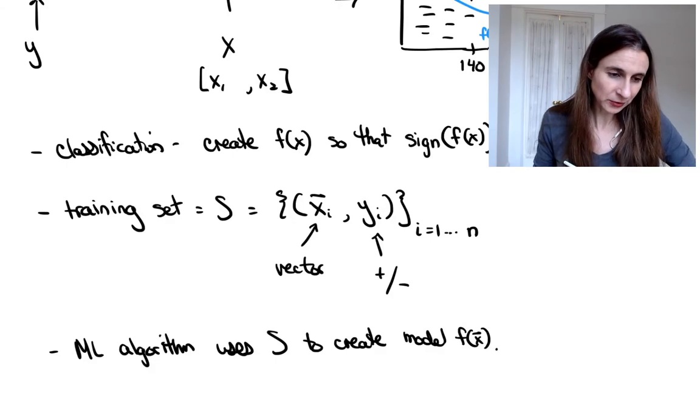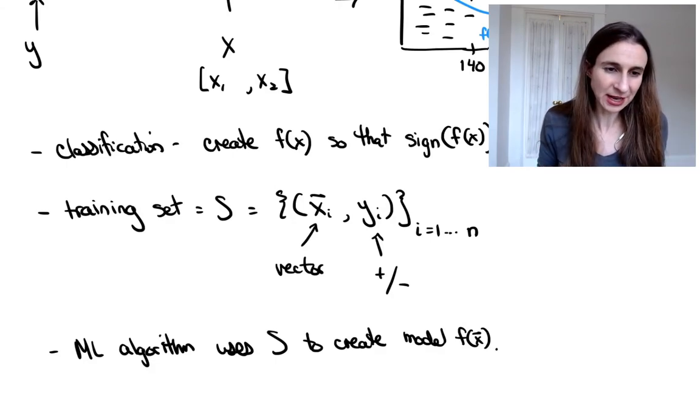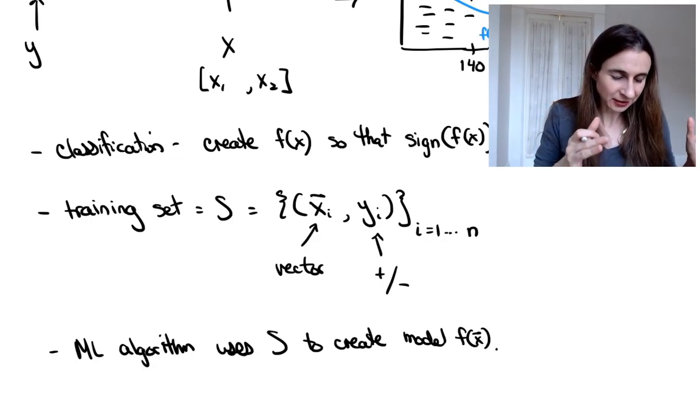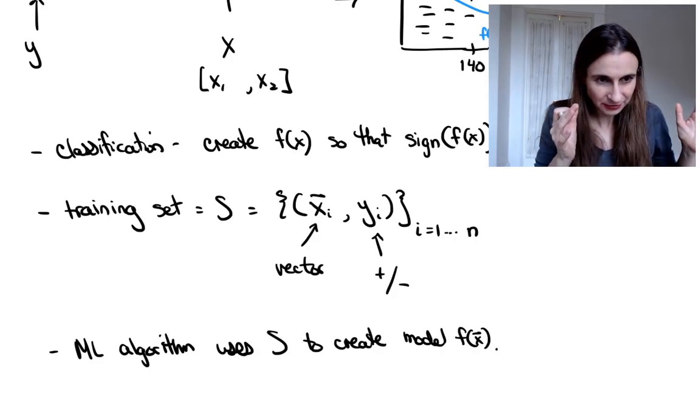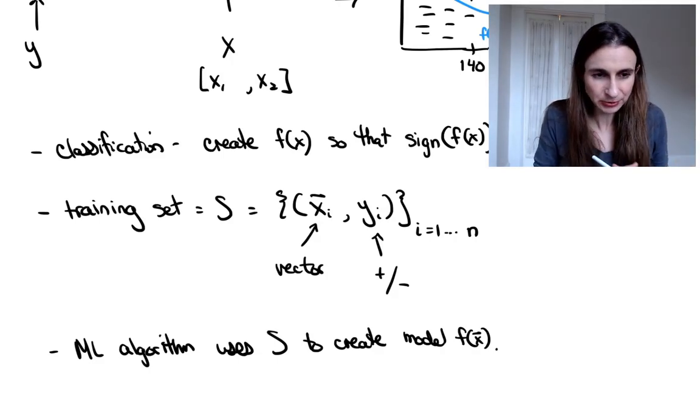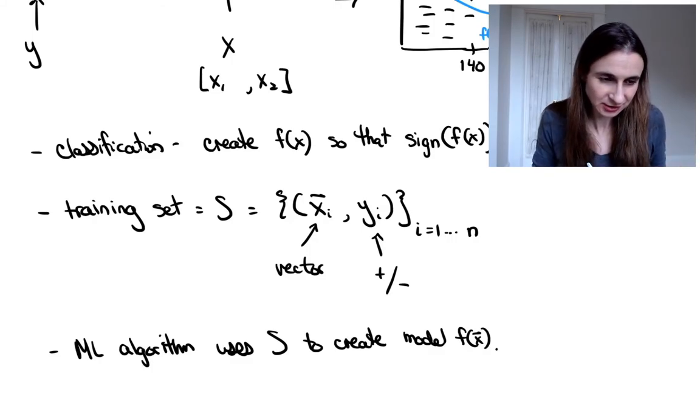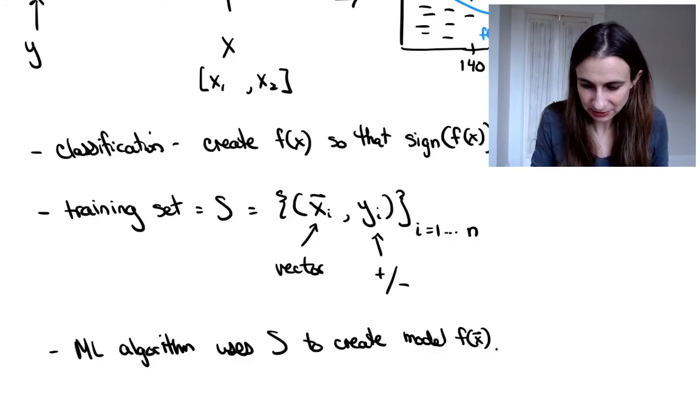Credit card fraud. So if you think about all the transactions that happen to go through credit card companies, right? Credit card companies have whole sets of hundreds of people whose teams of people whose job it is to detect fraudulent transactions in credit cards. And those algorithms are based in machine learning.